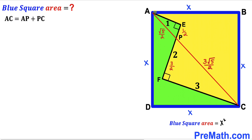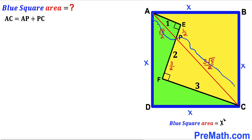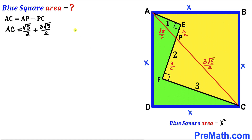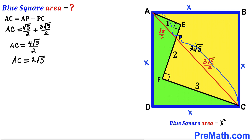The whole diagonal AC equals AP plus PC. Substituting, AC equals √5/2 plus 3√5/2, which simplifies to 2√5 units. So the diagonal AC is 2√5.